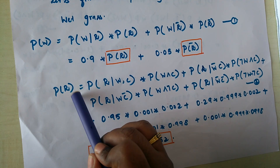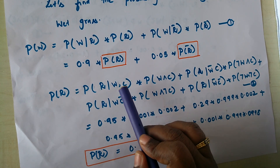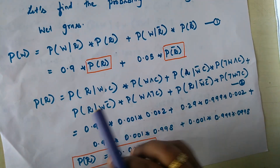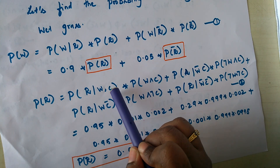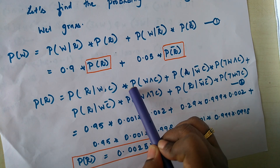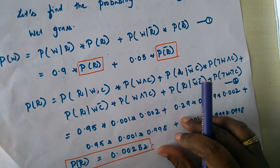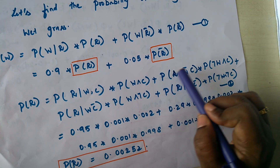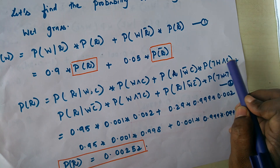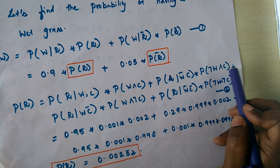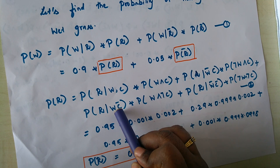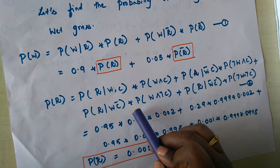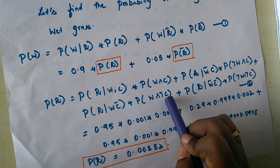First, we calculate the probability of rain. Rain has two parents: windy and cloudy. The probability of rain is the sum of four terms — each is the conditional probability of rain given a combination of windy and cloudy values, multiplied by the joint probability of that combination: windy and cloudy; not windy and cloudy; windy and not cloudy; and not windy and not cloudy.